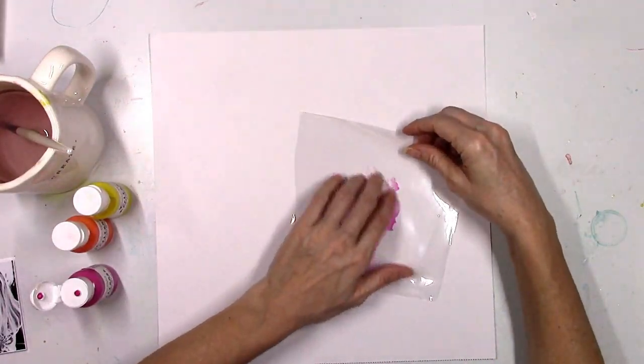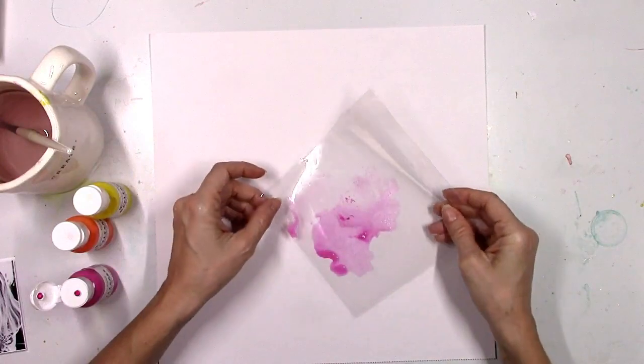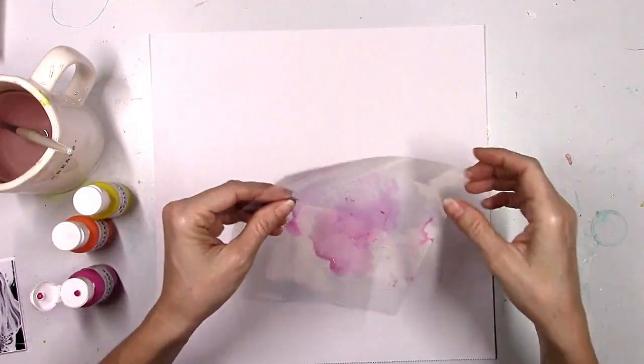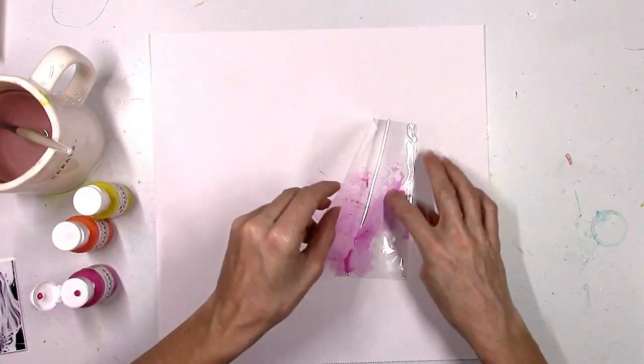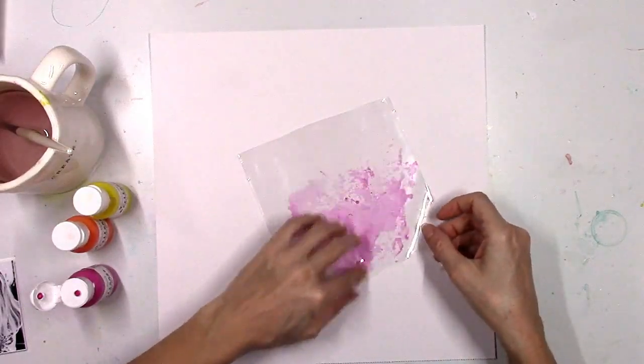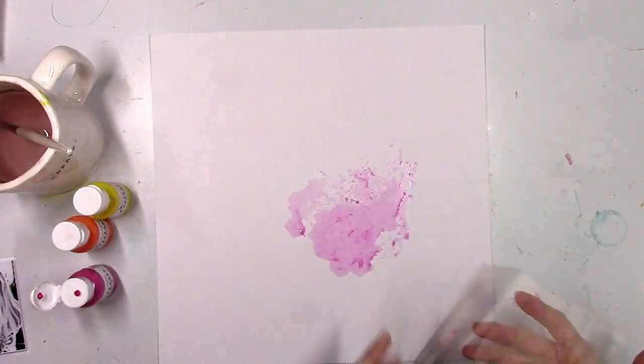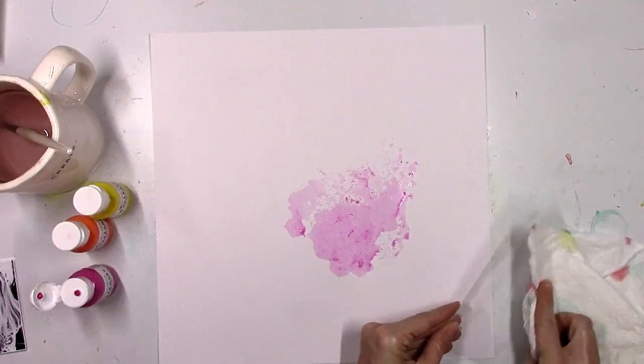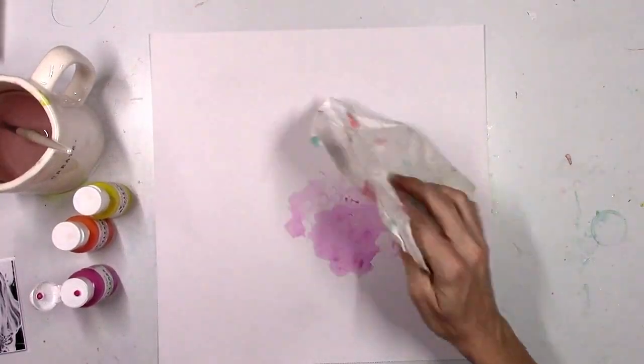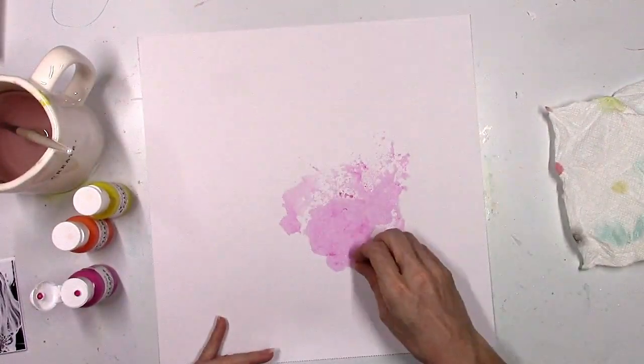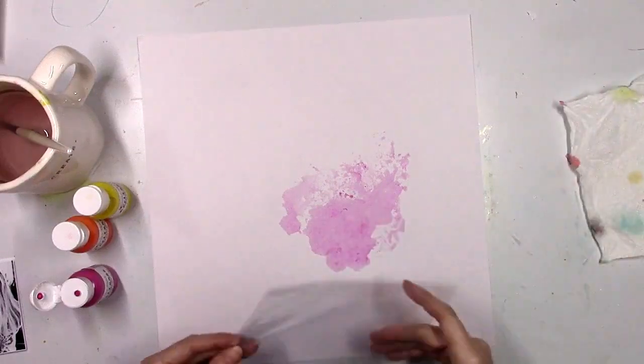You may also call this the smooshing technique. It's not technical, it's just plastic packaging and color. This pink is the Pinkadelic and it is so pretty. I love how it looks and I love how the packaging gives you this very abstract splotchy look. It's totally different than if you were to use a brush, and it just depends on what look you want and what you're going for.